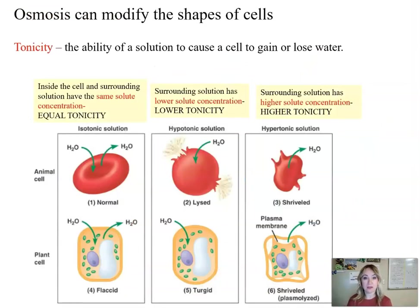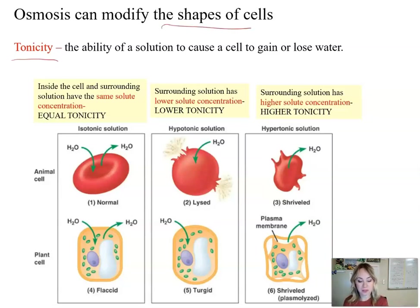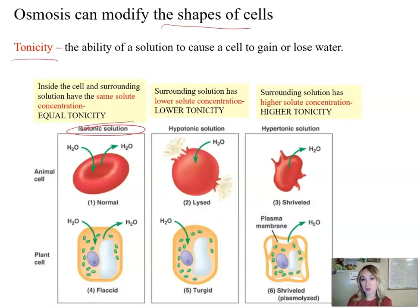If we take cells and immerse them in different solutions with different levels of tonicity, we're going to observe changes in the shapes of these cells. For example, if we take a normal animal cell and put it in an isotonic solution, water is going to be moving in and out of that cell at equal rates. The size and shape of the cell will not be affected because the surrounding solution has the same solute concentration as the inside of the cell.